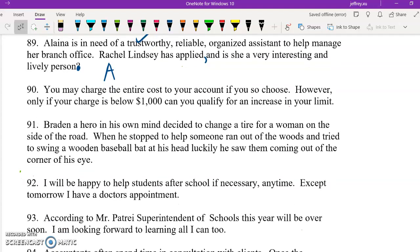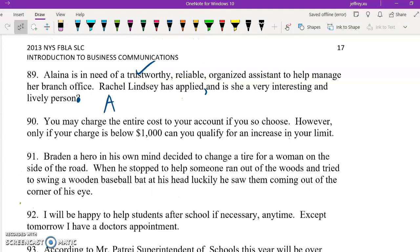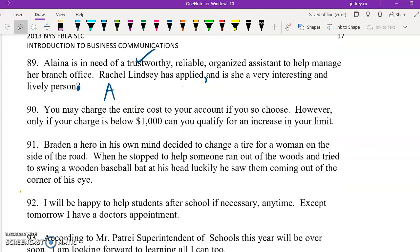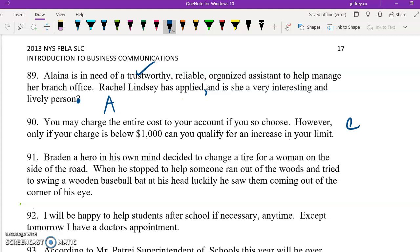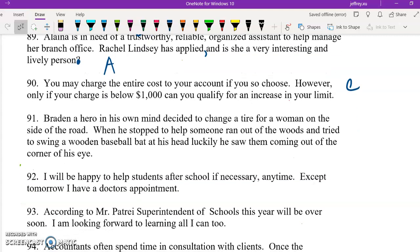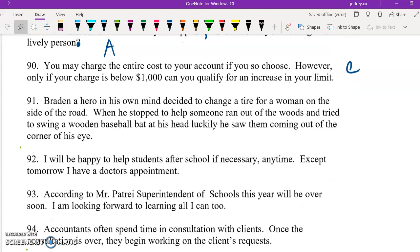You may charge the entire cost to your account if you so choose. However, only if your charge is below $1,000 can you qualify for an increase in your limit. So in this case, both sentences are punctuated correctly. All the commas and whatnot are situated in their proper positions. Brayden, a hero in his own mind, decided to change a tire for a woman on the side of the road. When he stopped to help someone ran out of the woods and tried to swing a wooden baseball bat at his head. Luckily he saw them coming out of the corner of his eye. Okay, that is missing a lot of commas. So your second sentence is incorrect. It's missing a bunch of commas. It's a run-on. In your first sentence, a hero is what's called an appositive phrase. It kind of modifies a noun. So neither of these is correct. Appositives need commas.